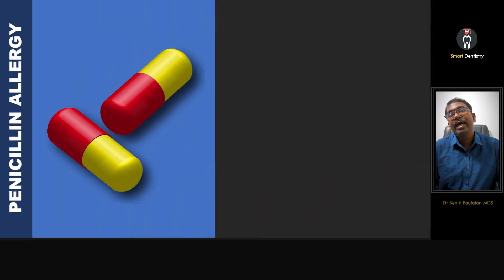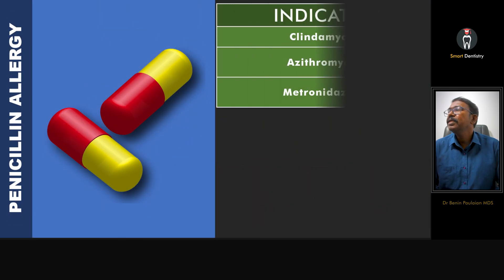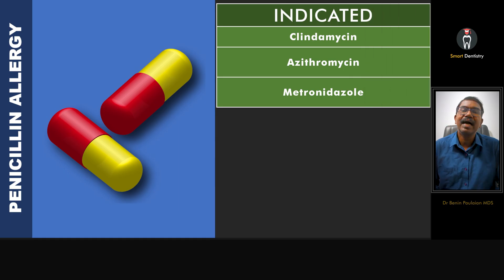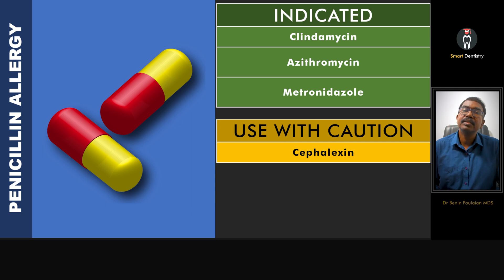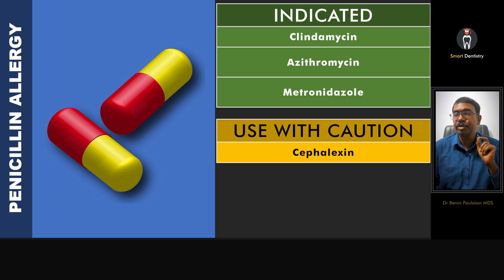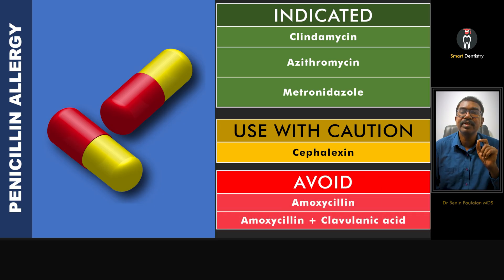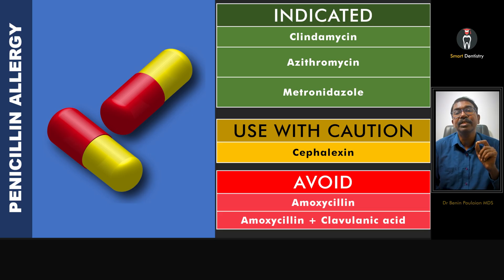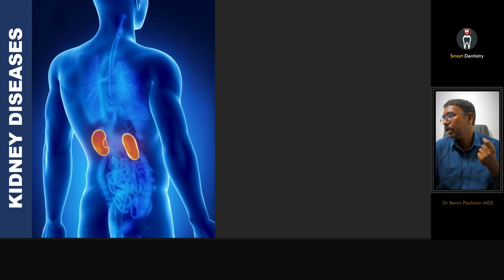For those individuals who are allergic to penicillin, it is always better to use clindamycin. The alternative drugs include azithromycin and metronidazole. Cephalexin, which is a cephalosporin, must be used with caution because 10% of individuals who are allergic to amoxicillin will also be allergic to cephalosporins. Amoxicillin and amoxicillin with clavulanic acid must be avoided because they are allergic to penicillin.